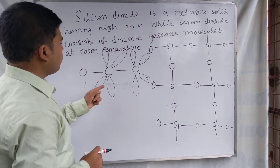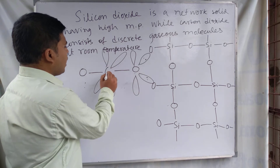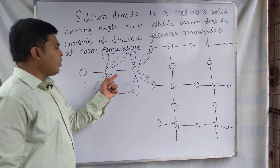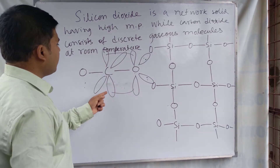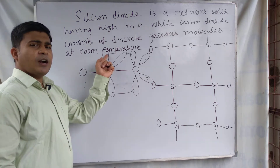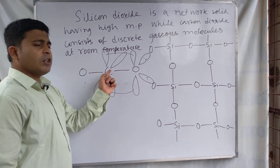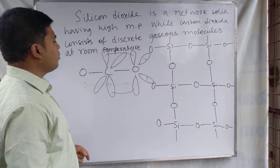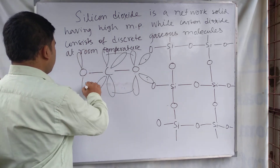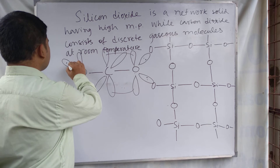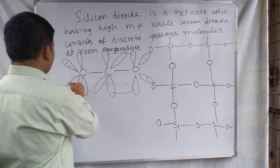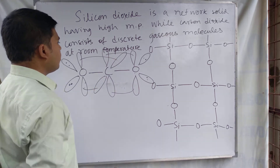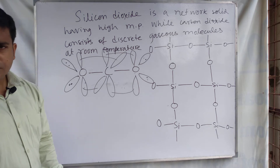In this structure, carbon has the 2pz orbital and 2py orbital. Carbon is sp hybridized, so the unhybridized orbitals present on carbon can overlap with the p orbital of oxygen to form the carbon dioxide molecule.